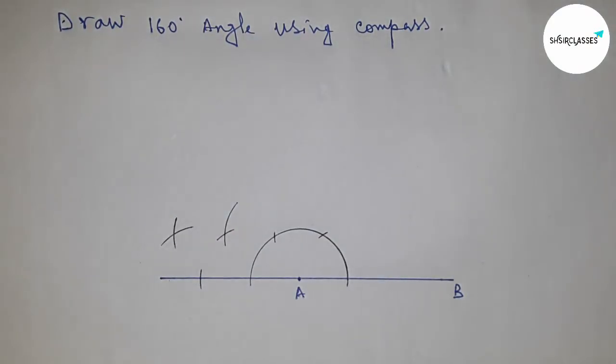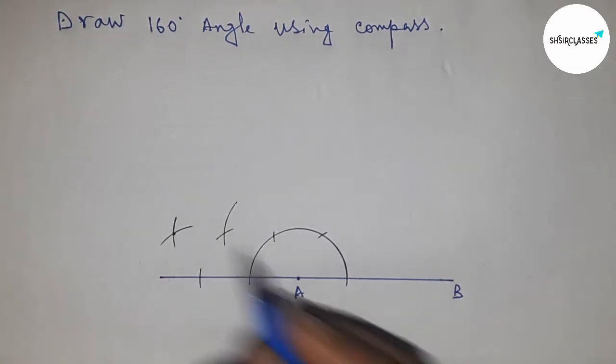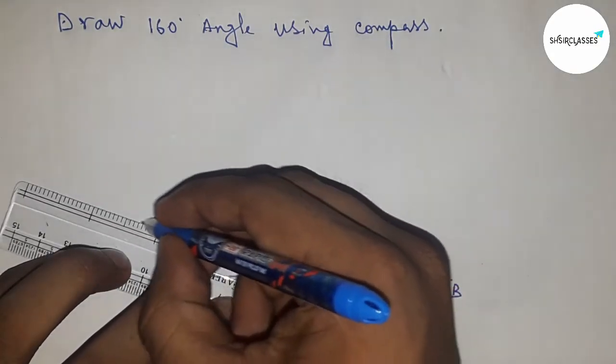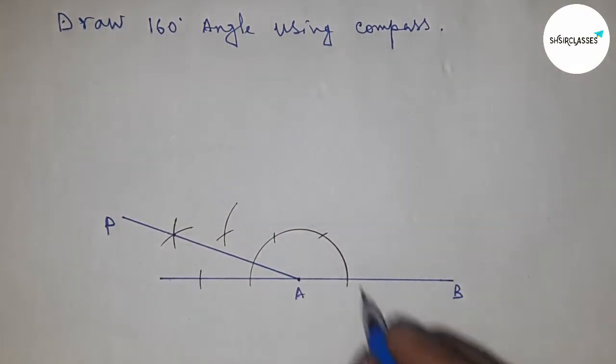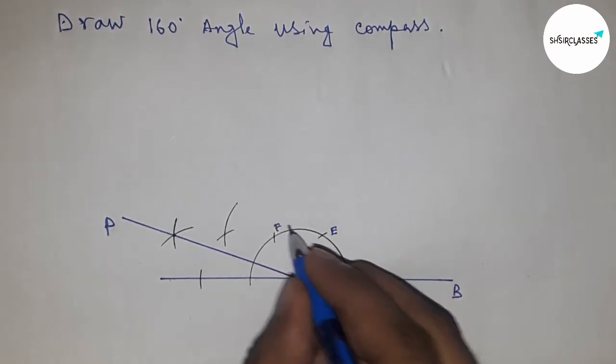Next, join this point and A. So we got this point P. Angle PAB is 160 degrees.